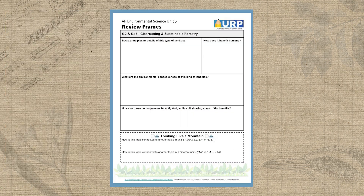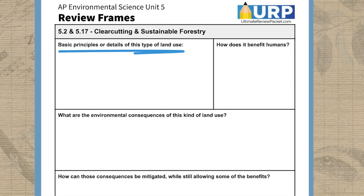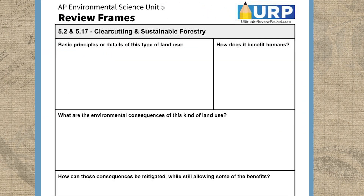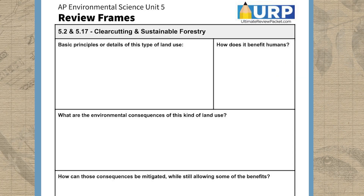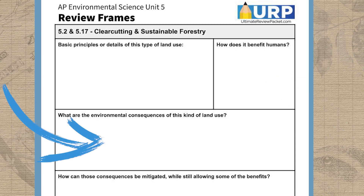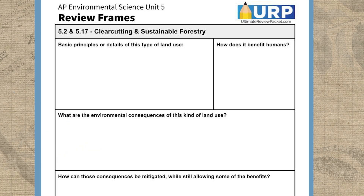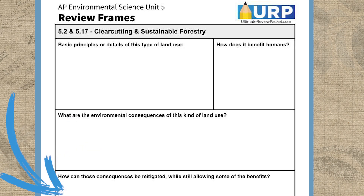Since each of the different topics in Unit 5 will cover some aspect of land use, we can use a very similar frame for thinking about almost every topic in Unit 5. First, we want to establish some basic details about the type of land use. Then we can turn our attention to three key questions: What benefits do humans get from this land use — why do we even do this in the first place? Second, what environmental and human-related problems happen from this land use? And third, what solutions are there to still get the benefits of this land use with fewer of the problems?